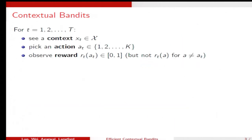Let me more formally define this problem. In each round, the learner will see a context. Then based on this context, she will pick an action from 1 to k.